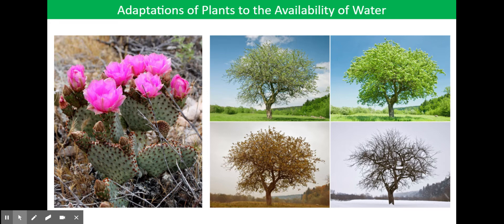A waxy cuticle on the leaf will reduce water loss due to evaporation through the epidermis. The stomata are often found on the undersurface of leaves, not on the top surface, which reduces evaporation due to direct heating from the sun. Most stomata are closed at night when there is no light for photosynthesis. Deciduous plants lose their leaves in winter when the ground may be frozen, making water less available and when temperatures may be too low for photosynthesis.